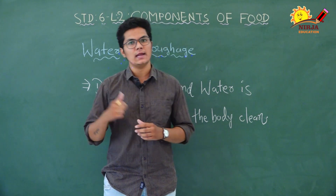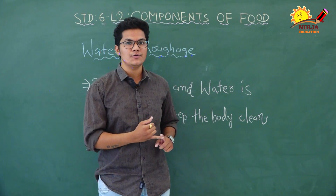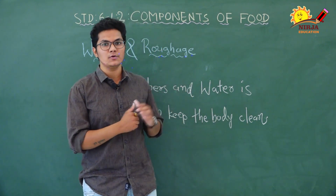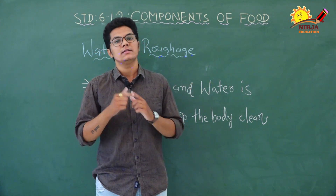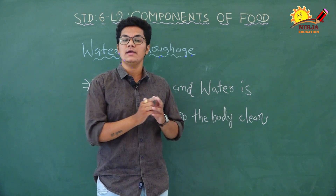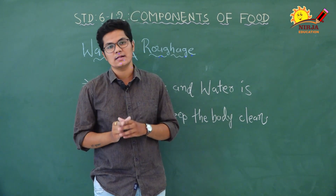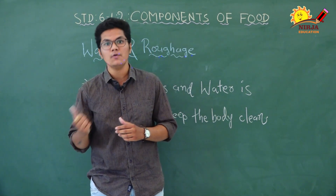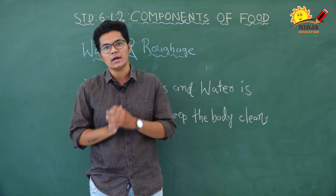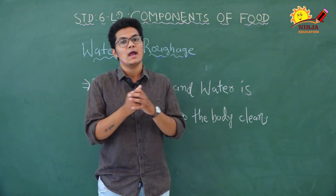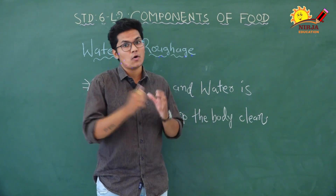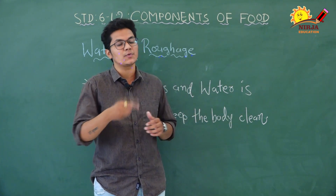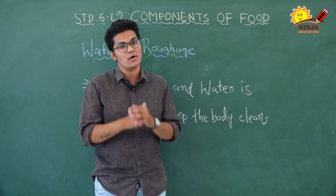We learned about macronutrients and micronutrients. Macronutrients are carbohydrates, proteins, and fats — they are energy-giving nutrients. They give us energy, build body, and repair worn-out tissues and cells. Micronutrients are vitamins and minerals, called protective nutrients because they protect our body from infections and disease. All of these — vitamins, minerals, carbohydrates, protein, and fats — are very important for our body.